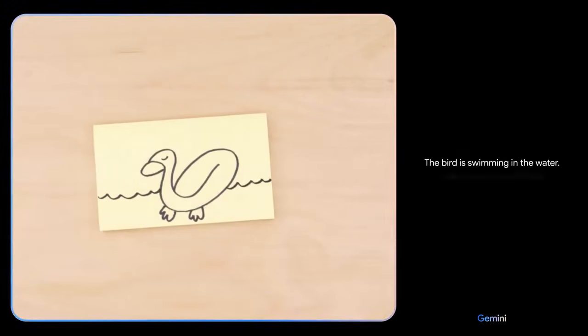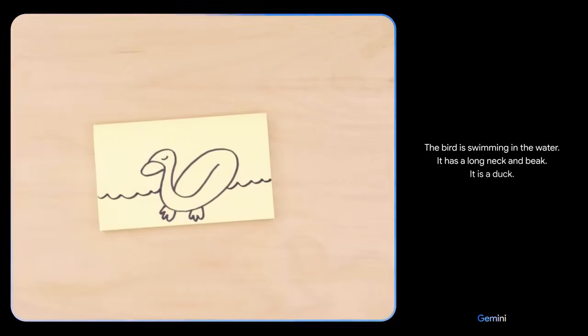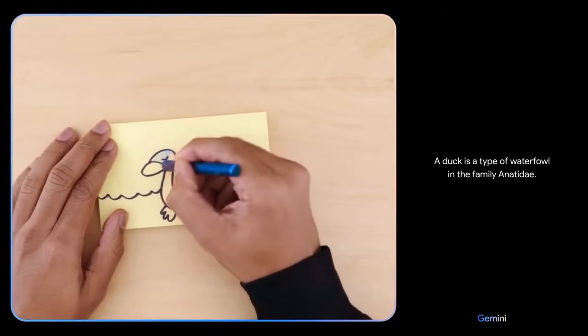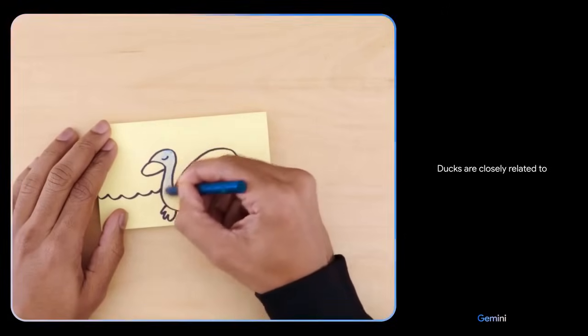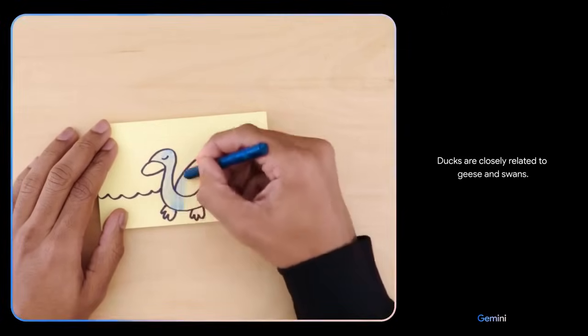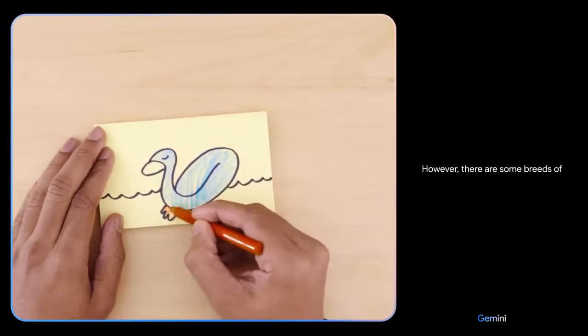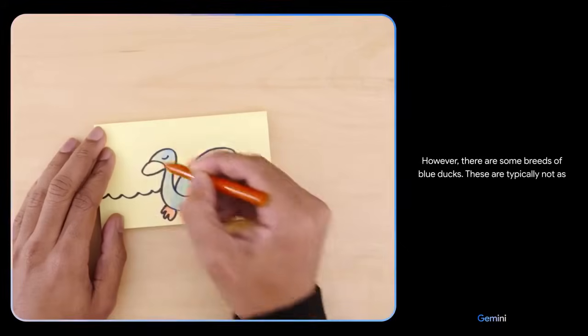What if I add this? The bird is swimming in the water. It has a long neck and beak. It is a duck. Yes, a duck is a type of waterfowl in the family Anatidae. Ducks are closely related to geese and swans. The duck appears to be blue.